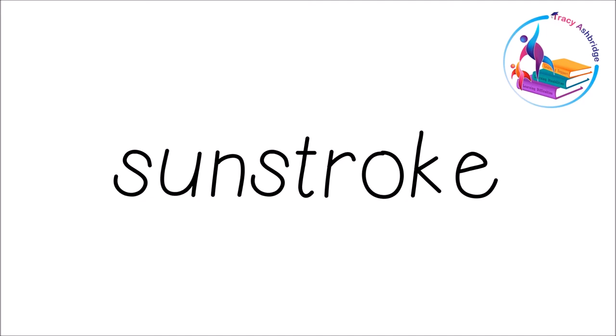Vowel, consonant, chop. Vowel, consonant — and look, we've got the E working with the O again, a split digraph. So S-A-N — 'sun', S-T-R-O-K-E — 'stroke'. 'Sunstroke'. Often when we're working with some of the simpler words in syllables, you will find that it's two words put together, like 'sun' and 'stroke' — and earlier we did 'shellfish', two words put together.